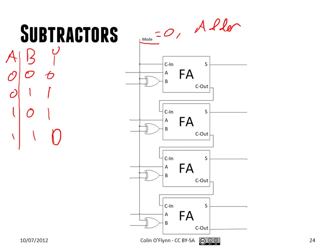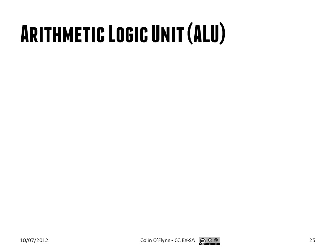This idea of selective inversion leads to the arithmetic logic unit. The arithmetic logic unit is sort of a generic thing used in computers where we want instructions telling it what to do — we don't want to hard-code it only as an adder or only as a subtractor. Instead, we specifically tell it: do an addition, do a subtraction, do other operations.